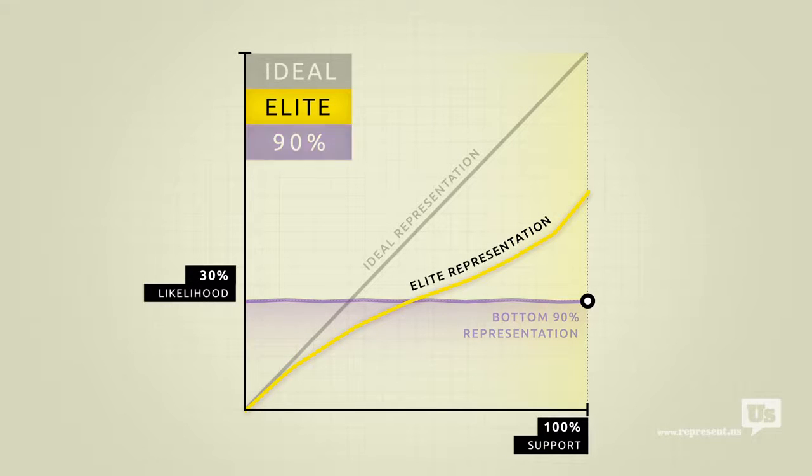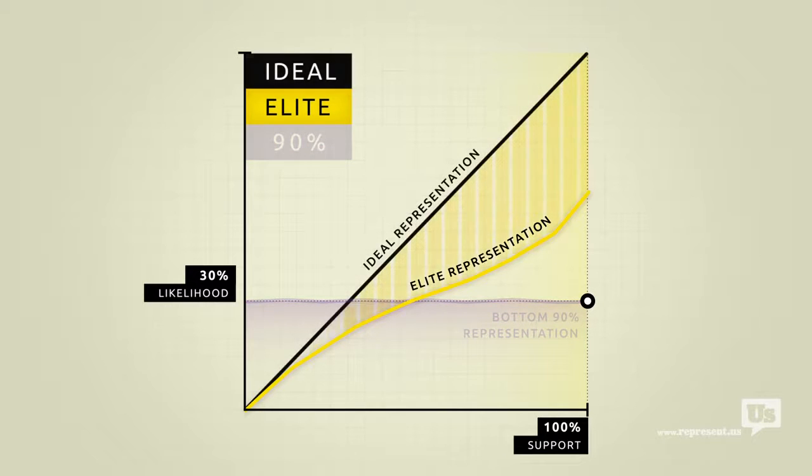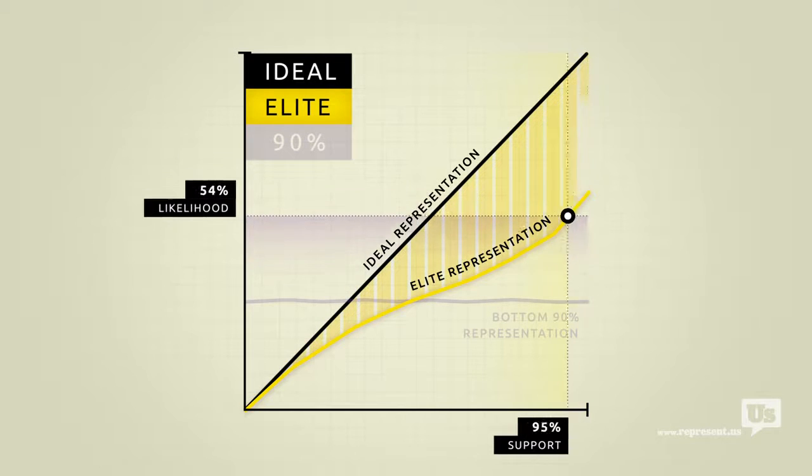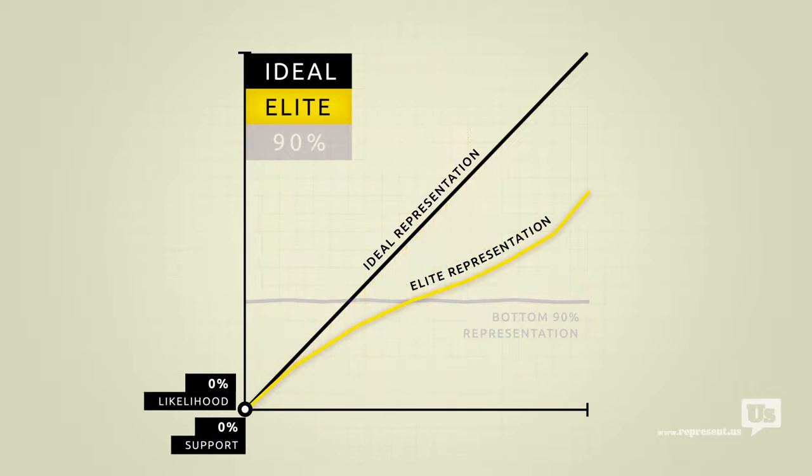Look at how much closer their line is to the ideal. When they want something the government is much more likely to do it. And when they don't, they have the power to completely block it from happening, no matter how much the rest of the country supports it. They get what they want and guess who ends up paying for it.